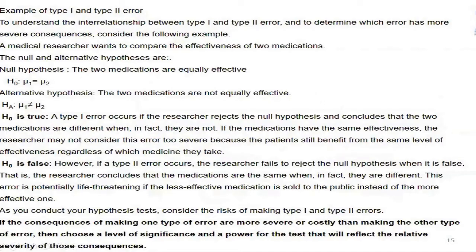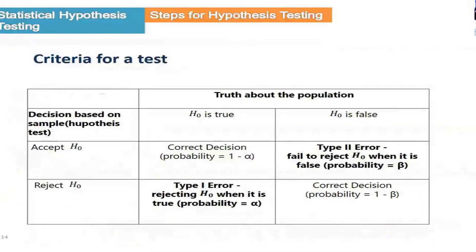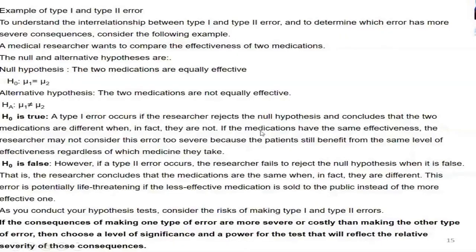Example of making type 1 error and type 2 error and which is more severe. The question is: which is more severe — type 1 error, rejecting a true null hypothesis, or type 2 error, accepting a false null hypothesis? It is very difficult to answer which is more severe; it depends on the test.